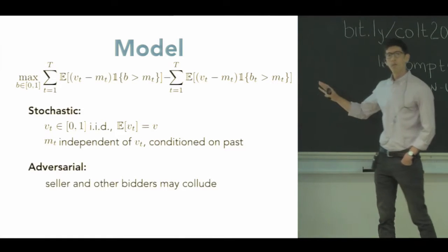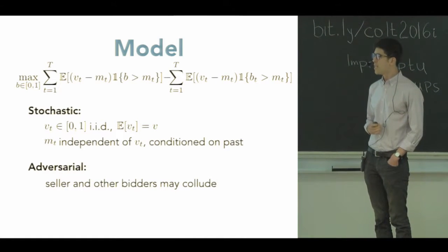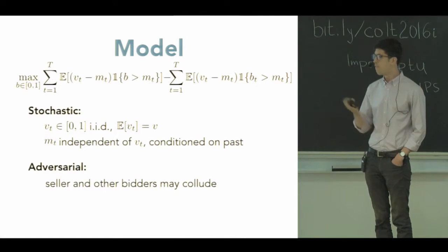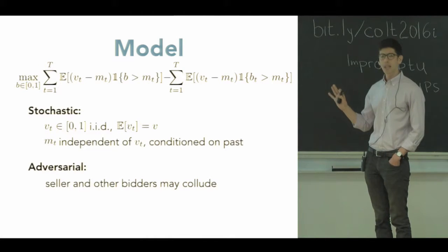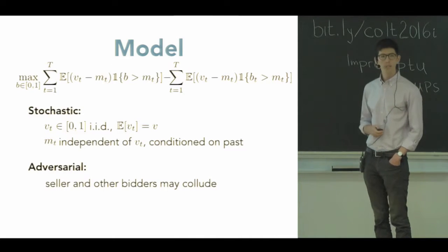In the adversarial setup though, we remove this extra assumption. We see maybe there is some collusion. Maybe M_T has special access to V_T and V_T is no longer necessarily random. So in this case, we don't make any stochastic assumptions. We even allow the bidders and the seller to collude.